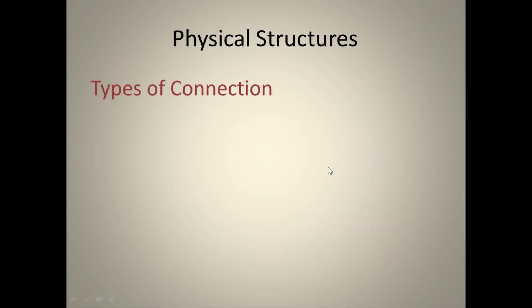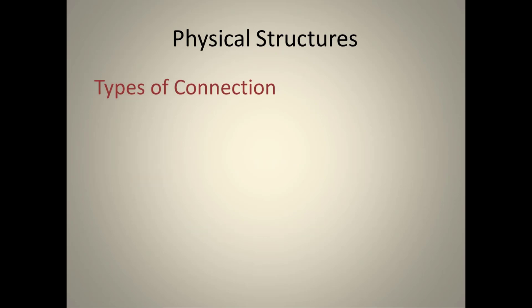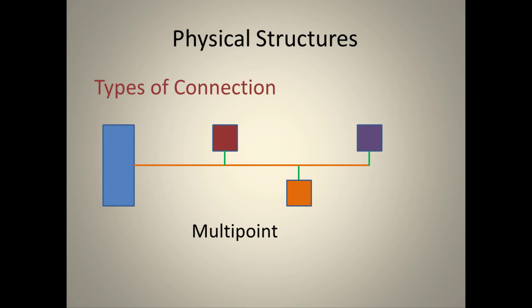Regarding physical structures, there are two types of connection. In a point-to-point connection, two hosts are connected by a dedicated link that no other host shares. In a multi-point connection, multiple hosts share a single connection to a server or machine.